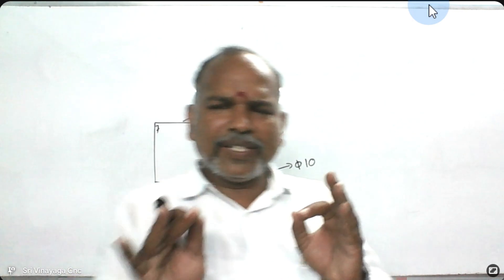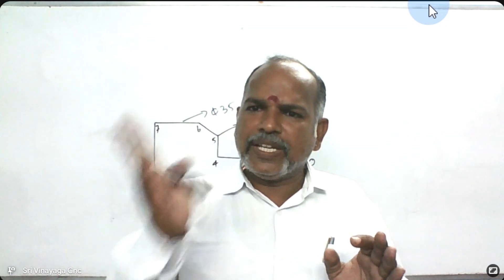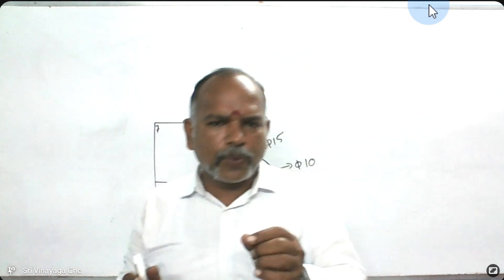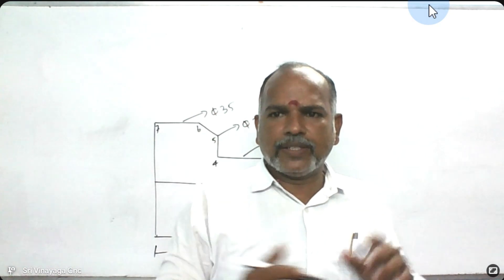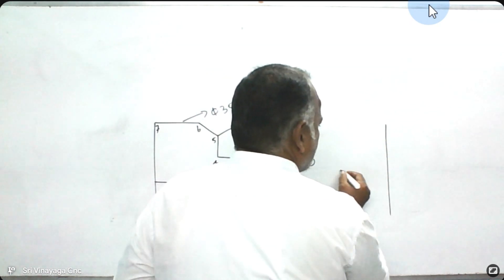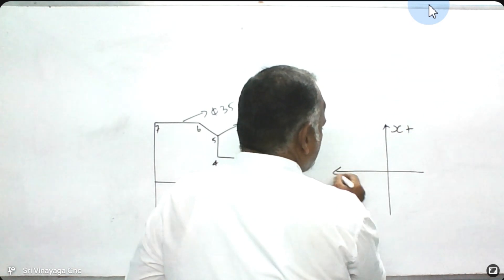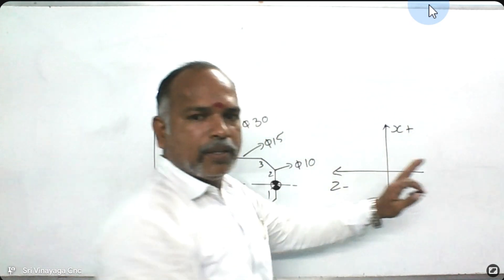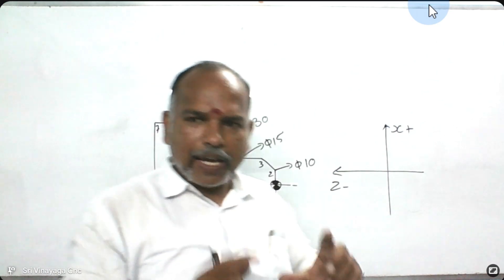These are the simple basic things. If you know how to calculate this, then nothing is better. X-plus — everything will be in X-plus. Everything will be in Z-minus. That's all. If you take any program and look at it, the maximum will be in X-plus and Z-minus. Why? Because X indicates diameter.